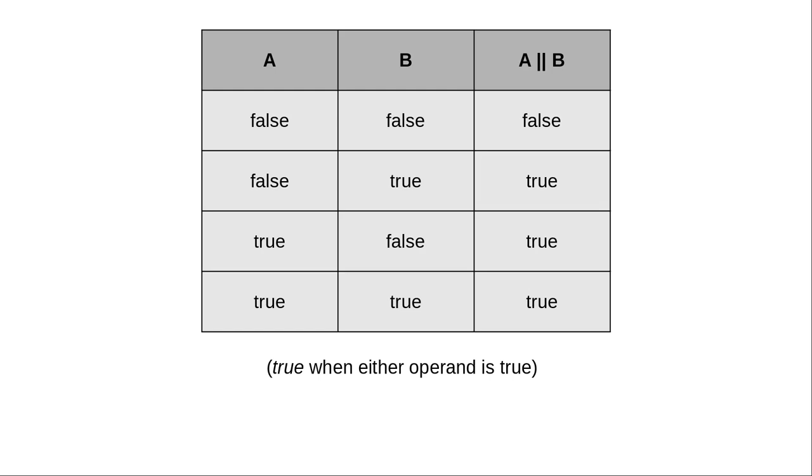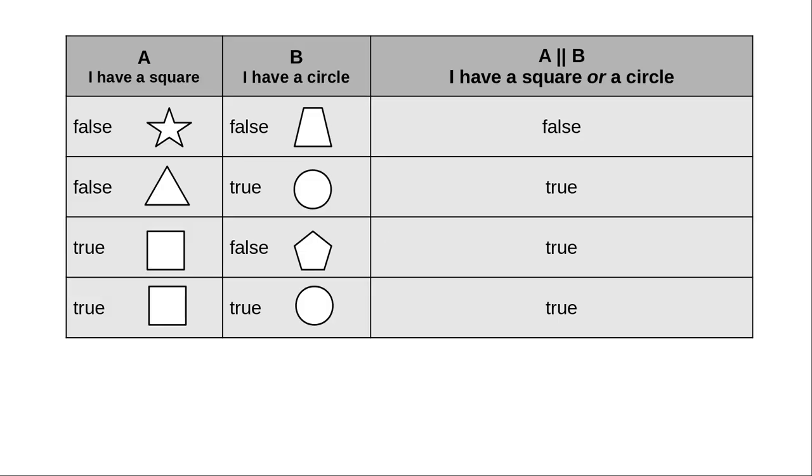Here's the truth table for OR. And here's an example with the squares and circles. The only part that seems weird to people is this last case. If you have both a square and a circle, you still have at least one of them, so this turns out to be true.